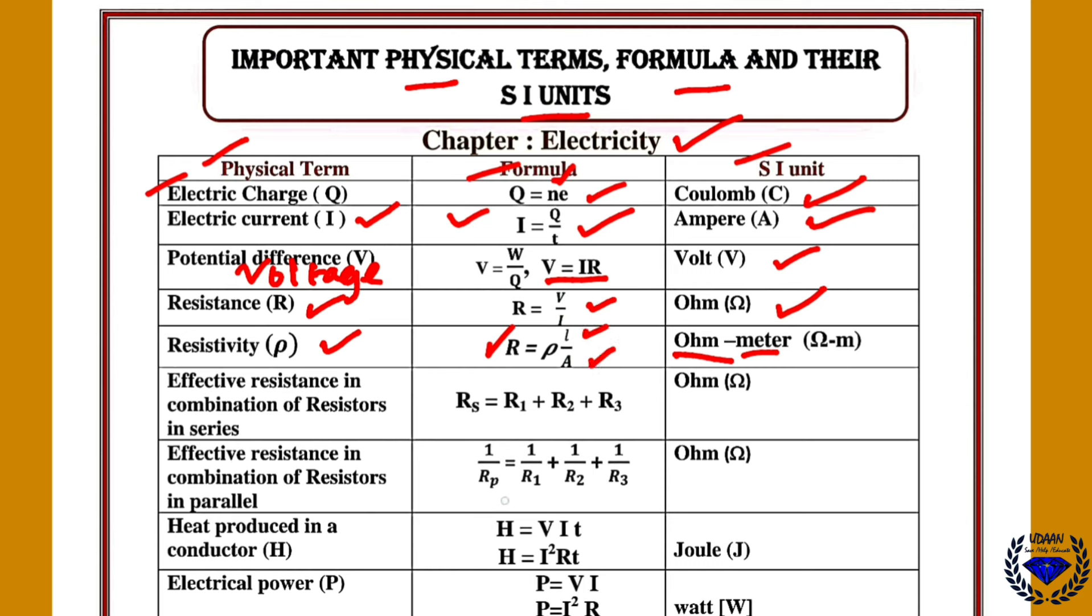Now effective resistance in combination of resistors in series. When you connect 3 resistors in series, then what is the effective resistance of that R1, R2 and R3 is R1 plus R2 plus R3. Simply add them.